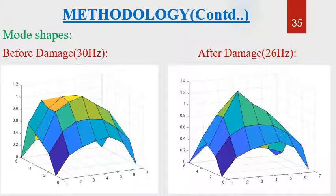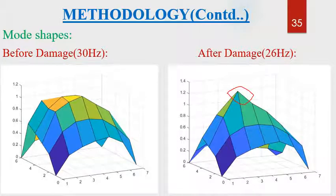Using FRF data, mode shapes were plotted in MATLAB to show a clear view comparing mode shapes before and after the damage. There is a small change in curvature after the damage. The natural frequency decreased from 30 Hz to 36 Hz before and after the damage. A sharp change in curvature is visible at the location of the damage.